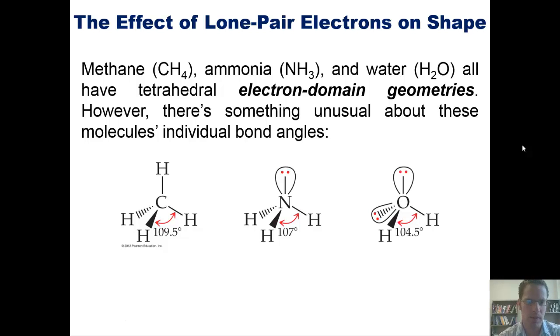However, there's something unusual about these molecules' individual bond angles. In methane, each of the groups around it are completely equal. They're all hydrogens, and they all have a 109.5 degree bond angle, perfectly tetrahedral, separating them.